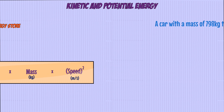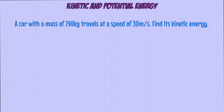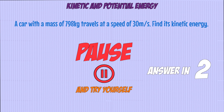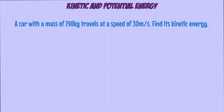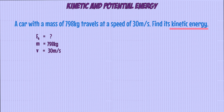Let's try a quick example using this equation. We have a car with a mass of 798 kilograms traveling at a speed of 30 meters per second, and we want to find its kinetic energy. The first thing to do in any calculation is to identify the information you have and what you're trying to find out. In this question, we've been given a mass of 798 kilograms and a speed of 30 meters per second, and we're asked to find out the kinetic energy.